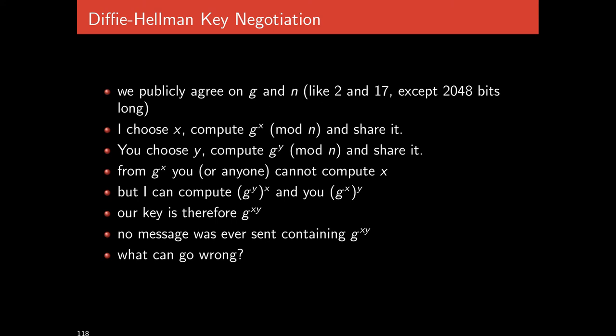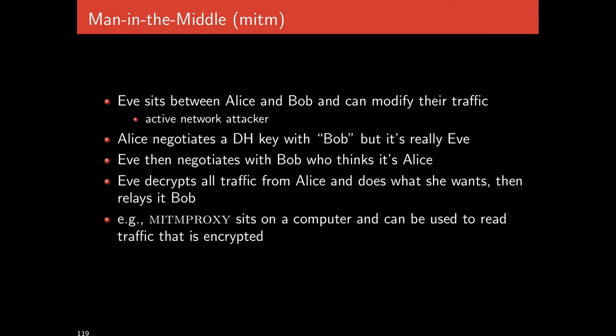Even if later someone is able to break public key cryptography — break our public key — there will be no message that actually contained the key, so it would not reveal it. As long as the discrete logarithm problem stays hard forever, we have an assurance on our communication. What can go wrong? Discrete logarithms might not end up being a hard problem after all — maybe some innovation or the development of a quantum computer will reveal this information. But another problem is a man-in-the-middle attack, also known as a MitM attack.